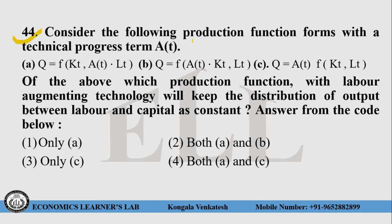Question number 44: Consider the following production function forms with a technical progress term AT. Function A: Q = f(KT, AT·LT). Function B: Q = f(AT·KT, LT). Function C: Q = AT·f(KT, LT). Of the above, which production function with labor augmenting technology will keep the distribution of output between labor and capital constant? Choice 1 — only A, choice 2 — both A and B, choice 3 — only C, choice 4 — both A and C. The right answer is choice number 1, that is only A.